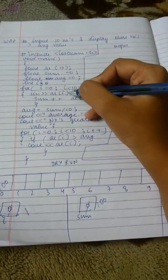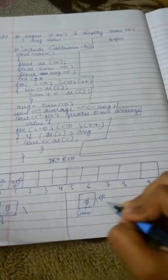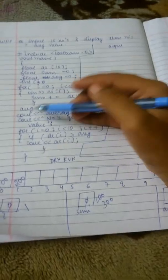1 is less than 10. We will input the number in ar[1], let's say 200. Sum will become 300 because sum is 100, ar is 200. We will add them, 300.